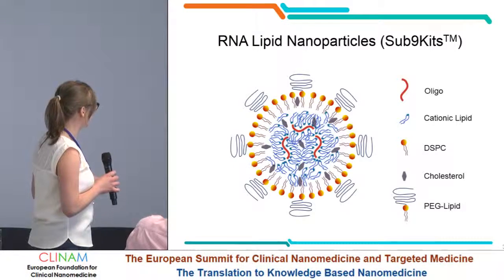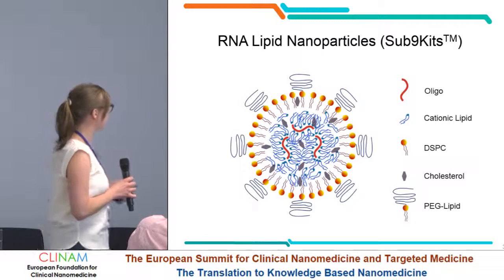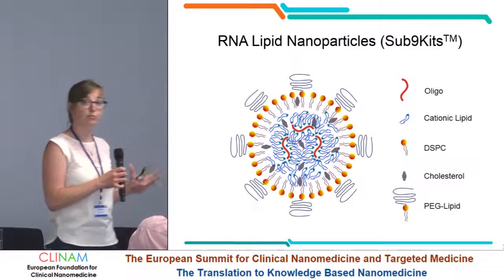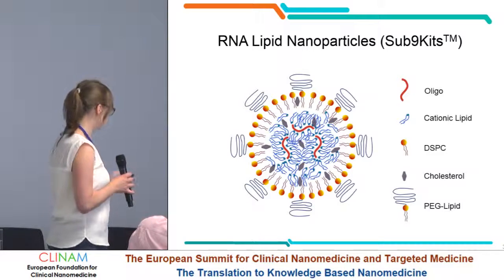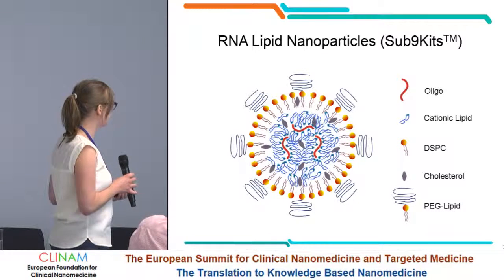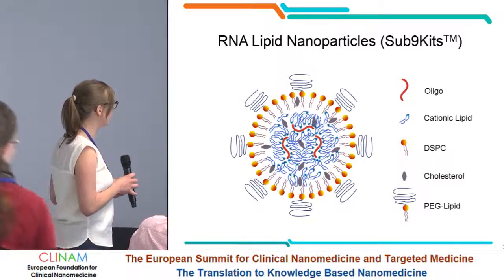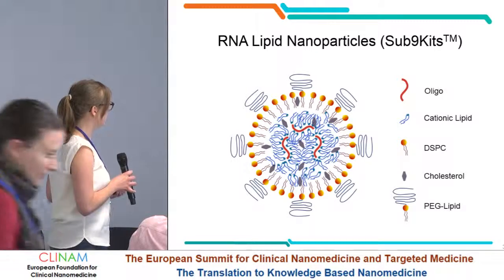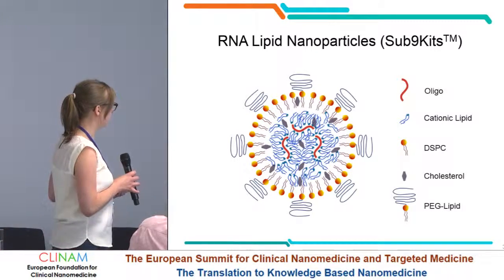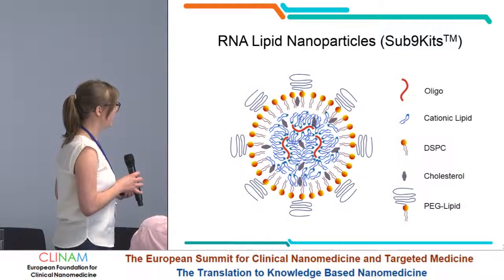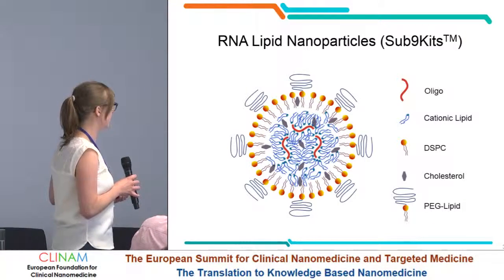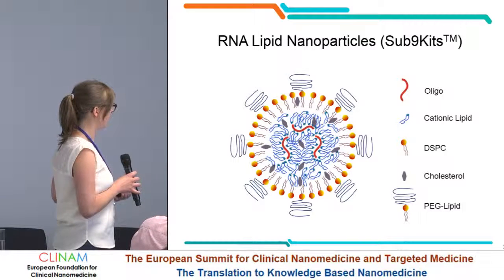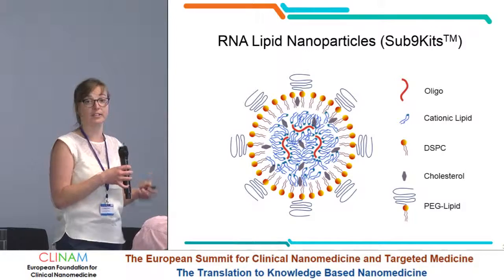We do this with these fairly complicated nanoparticles, which are neutral at pH 7.4 — physiological pH. You can see we have five components in total. The oligonucleotide, the RNA, is encapsulated inside. We have an ionizable lipid — not a cationic lipid. Then we have a layer of a helper lipid outside and also a PEG layer to prevent aggregation of these particles.